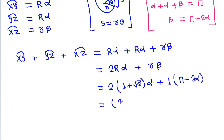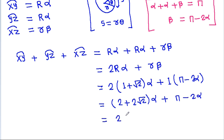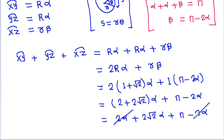Expanding: 2·alpha plus 2 root 2 times alpha plus pi minus 2·alpha. And 2·alpha cancels with minus 2·alpha. So the result is 2 root 2 times alpha plus pi.